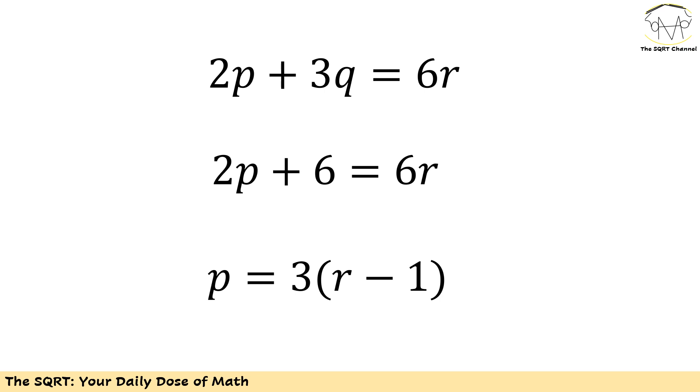Now that I know q equals 2, I'm going to simplify it and write 2p plus 3 times 2 equals 6 times r. After replacing q and doing a rearrangement, I have p equals 3 times r minus 1.